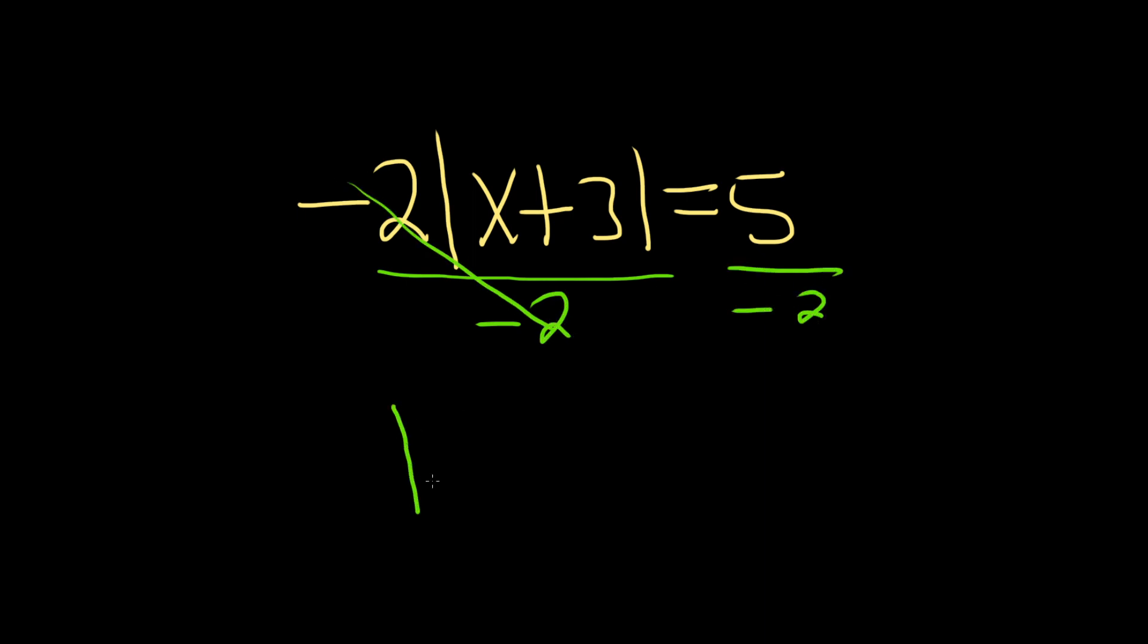So now we have the absolute value of x plus 3, and that's equal to negative 5 over 2. Now, this is a little bit sneaky.